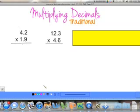So let's get started with 4.2 times 1.9. Again, we're just going to multiply like normal. So 9 times 2 is 18. 9 times 4 is 36, plus 1 is 37.